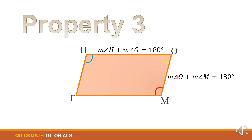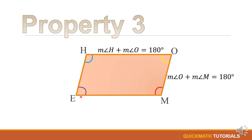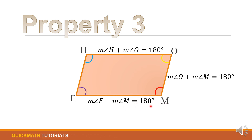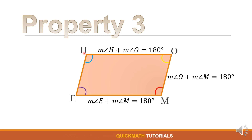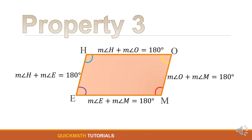Another consecutive pair: the measure of angle O plus the measure of angle M equals 180 degrees. Another consecutive angles are angle M and angle E: the measure of angle E plus the measure of angle M equals 180 degrees. And lastly, the consecutive angles angle E and angle H: the measure of angle H plus the measure of angle E equals 180 degrees.